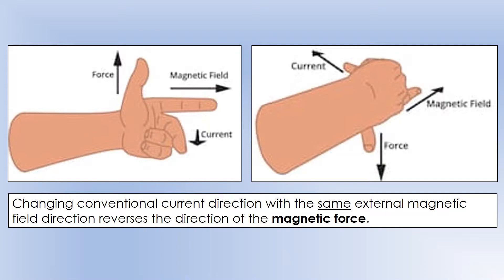In these two diagrams, the field is kept in pretty much the same direction — towards the right. What we're changing is the current from going out of the page to going into the page, and you can see the force completely changes direction according to Fleming's Left Hand Rule, which predicts exactly the same thing.